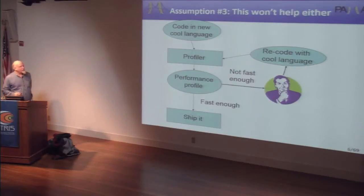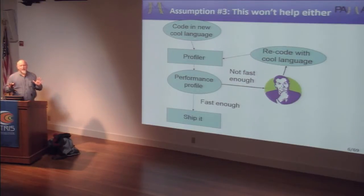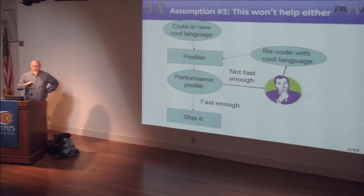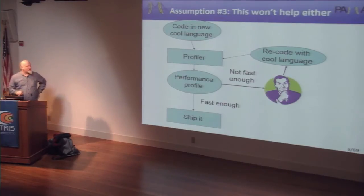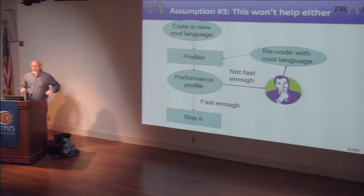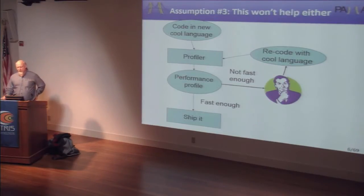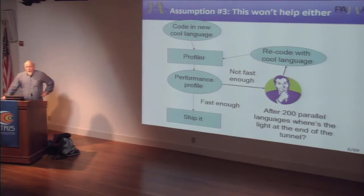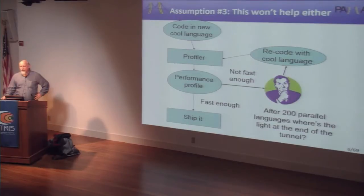Another contender is a new parallel programming language. You code portions in the new language, profile, and if it's not fast enough, recode more portions. Pretty soon you're recoding your entire application. The problem is there are 200 parallel programming languages and growing — and if any of them had actually worked like this, you'd have heard about it by now.